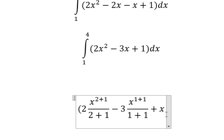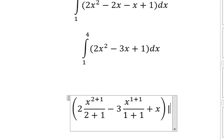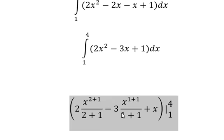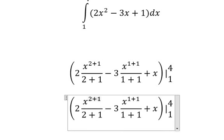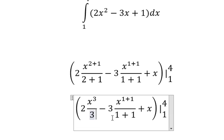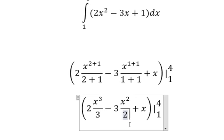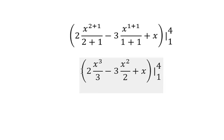Simplifying the denominators: 2 plus 1 equals 3, 1 plus 1 equals 2. So we have 2x³/3 minus 3x²/2 plus x. Now we evaluate at x = 4 and x = 1.